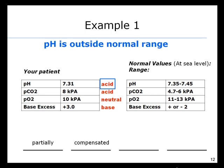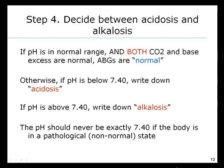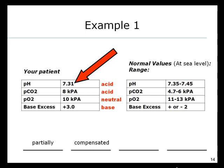Step four is to decide between acidosis and alkalosis. If the pH is in the normal range and both CO2 and base excess are normal, the arterial blood gases are normal. Otherwise, if the pH is below 7.40, write down 'acidosis'; if above 7.40, write down 'alkalosis.' The pH should never be exactly 7.40 if the body is in a pathological, non-normal state. Here, the pH is 7.31 — below 7.4 — so this patient is acidotic.